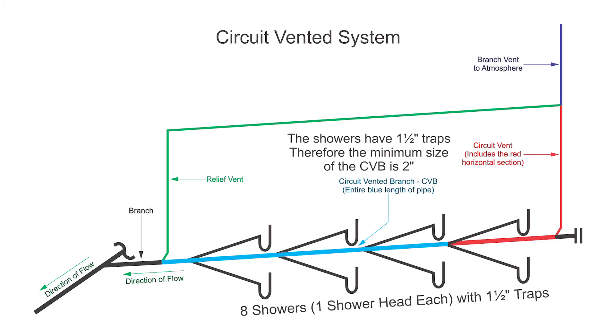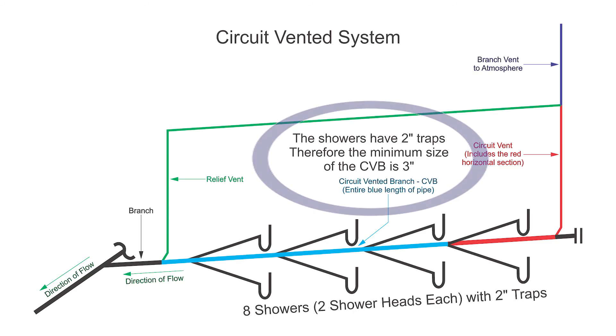The next two line items talk about the minimum size of a circuit vented branch. If I have a bunch of fixtures that have traps less than 2 inches in size, so 1.5-inch or 1.25-inch, then I need a minimum 2-inch circuit vented branch. But if my trap sizes are 2 inches and up, the minimum size of a circuit vented branch will be 3-inch.